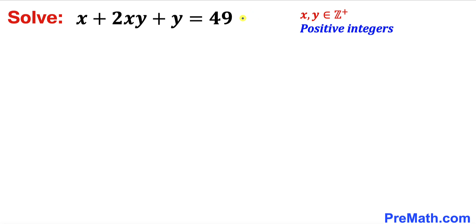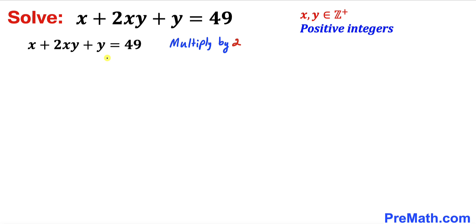Let's get started with the solution. We are going to focus on this equation. The very first thing we are going to do is multiply both sides of this equation by 2, so this is going to become 2x plus 4xy plus 2y equals 98.